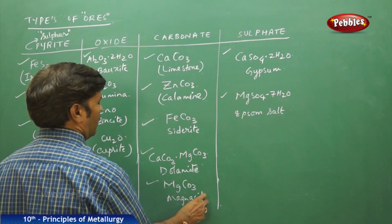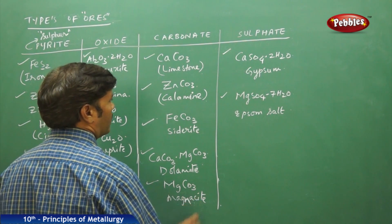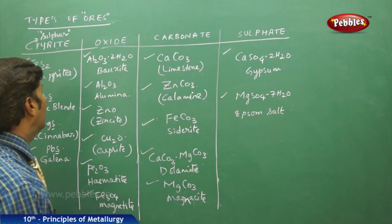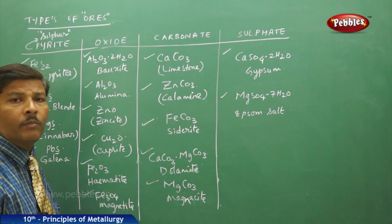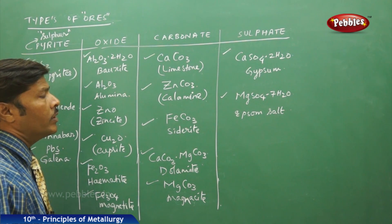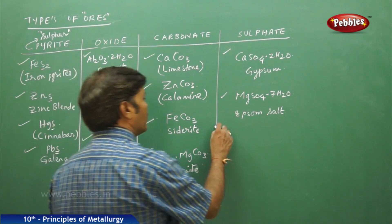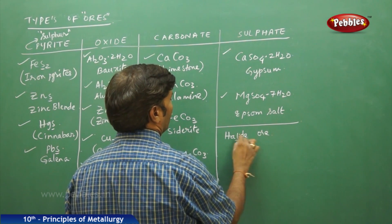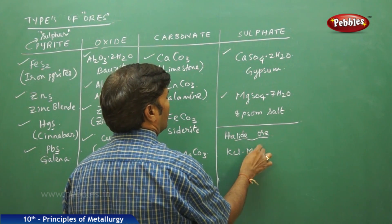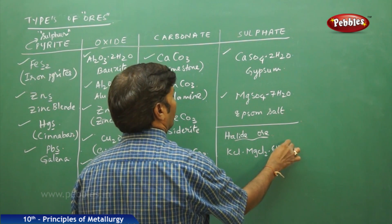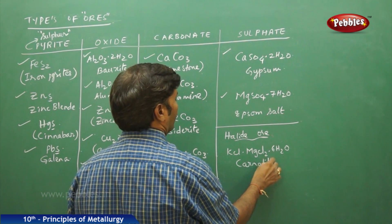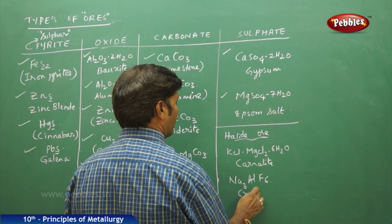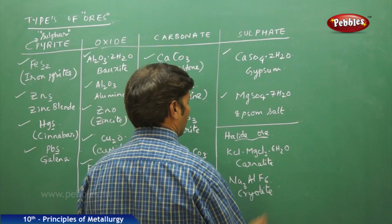We have briefly studied pyrite, oxide, carbonate, and sulphate mineral ores. You can also take halide ores, such as KCl·MgCl2·6H2O (carnallite) and Na3AlF6 (cryolite), and so on.